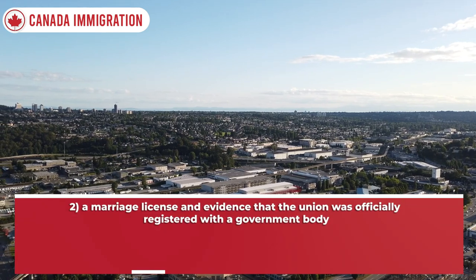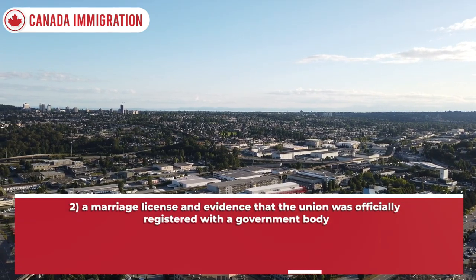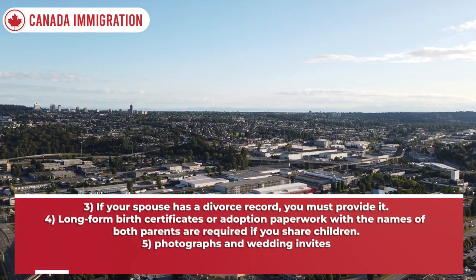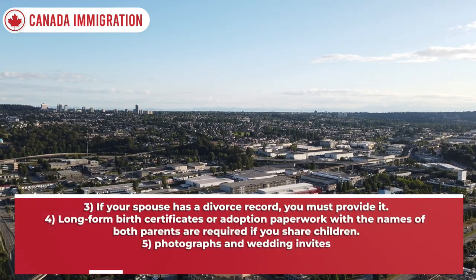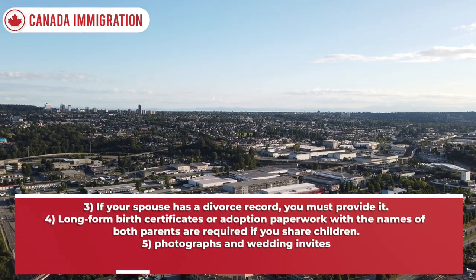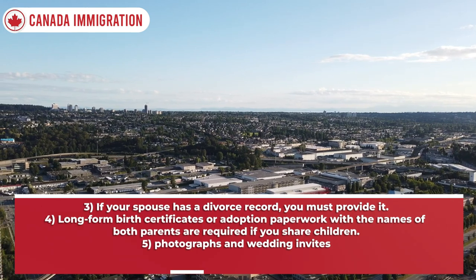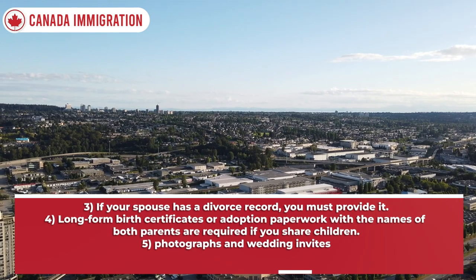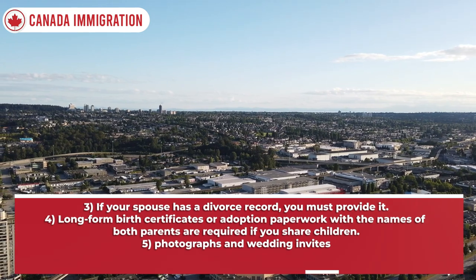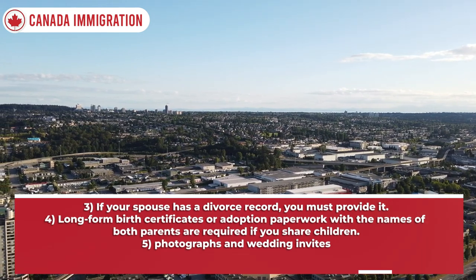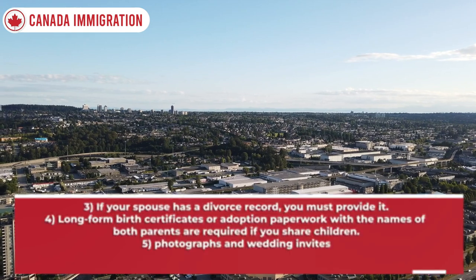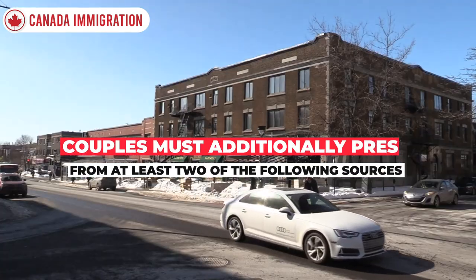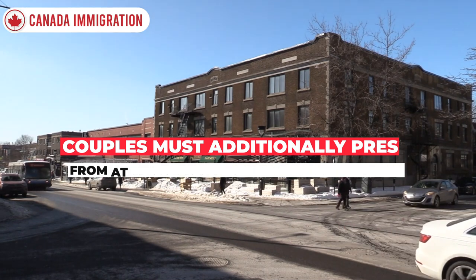A marriage license and evidence that the union was officially registered with a government body are required. If your spouse has a divorce record, you must provide it. Long-form birth certificates or adoption paperwork with the names of both parents are required if you share children. Additionally, photographs and wedding invites must be provided.